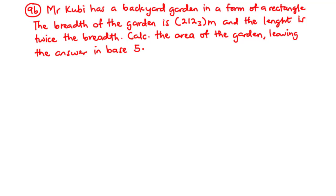For question 9b, Mr. Kubi has a backyard garden in the form of a rectangle. The breadth of the garden is 212 base 3 meters and the length is twice the breadth. Calculate the area of the garden, leaving the answer in base 5.